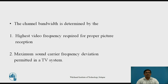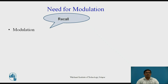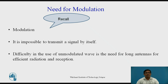The bandwidth of the channel is the summation of the highest video frequency and the maximum sound carrier frequency. Now, the need for modulation — modulation means the message signal. Whichever signal we transmit that contains the message is called modulation. It is impossible to transmit a signal by itself, that's why we require modulation.